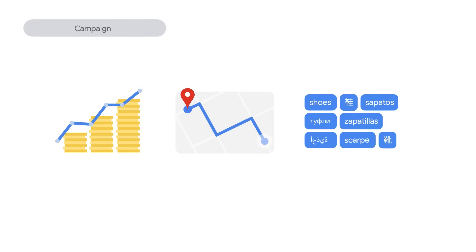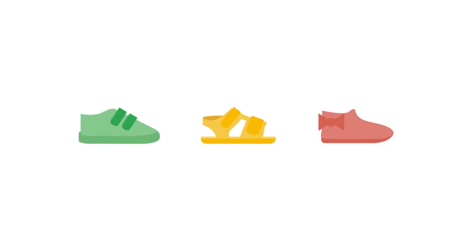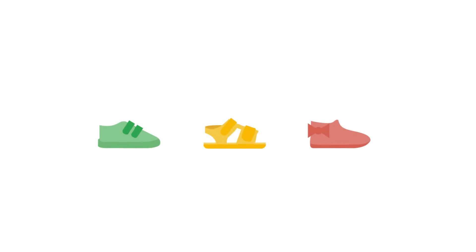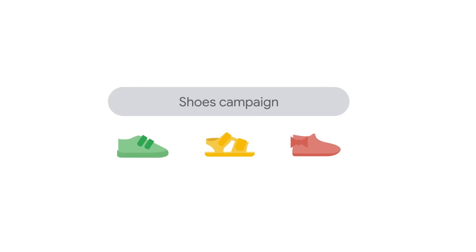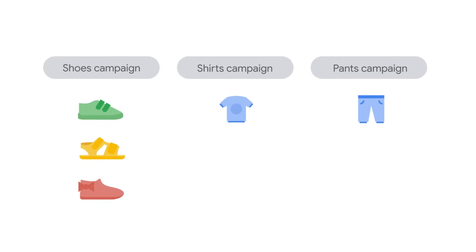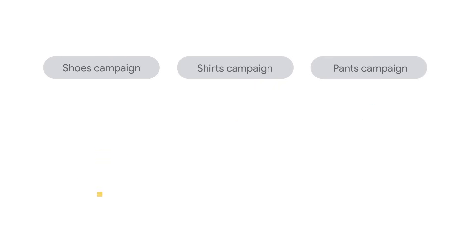Consider these settings when organizing your campaigns. Thinking about our example, the sneakers, sandals, and dress shoes ad groups would likely sit under a shoes campaign. We want these ad groups under the same campaign so that you can have a clear view of how shoes sell compared to shirts or pants. Another reason to structure your campaigns like this is if you have a separate budget for shoes, shirts, or pants.